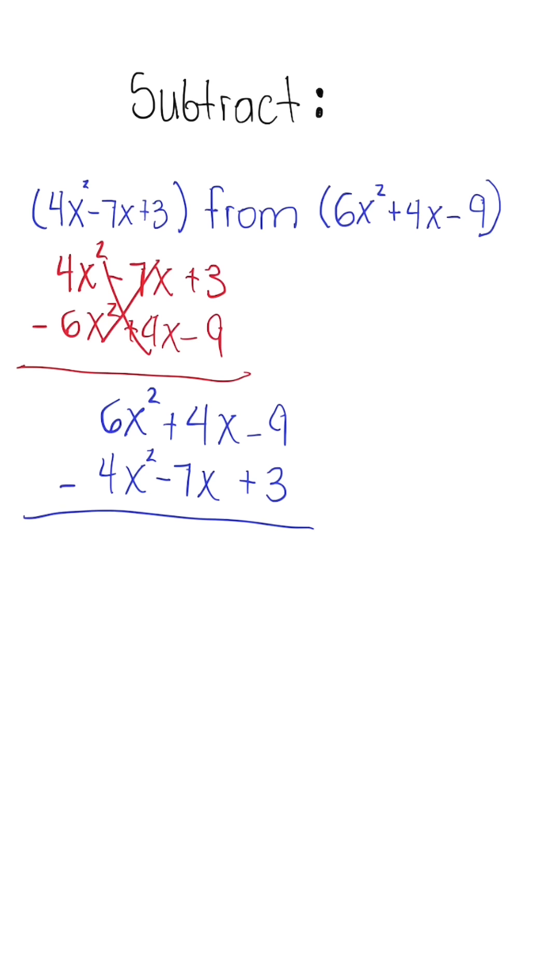So 6 minus 4 is going to give us 2x squared. 4 minus a negative 7, that turns into addition. So this is 11x. And negative 9 minus 3 is just going to give us a negative 12.